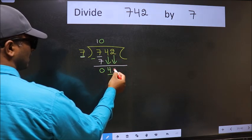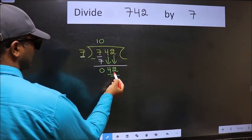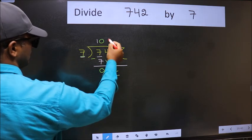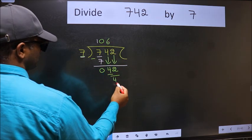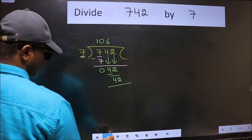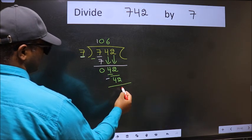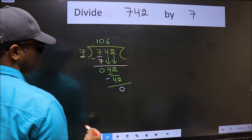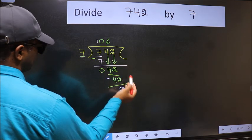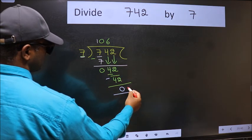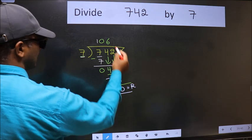Now 42. When do we get 42 in the 7 table? 7 sixes are 42. Now we should subtract. We get zero. No more numbers to bring it down, so we stop here. This is our remainder and this is our quotient.